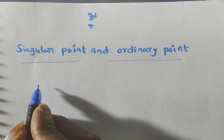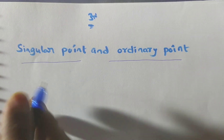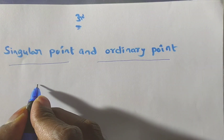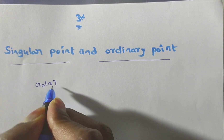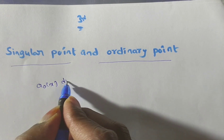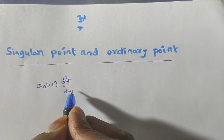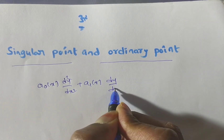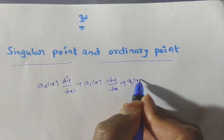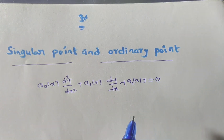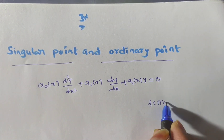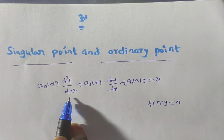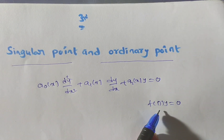Now, what is meant by singular point or ordinary point? We have to consider the second order differential equation of the form: a₀(x) · d²y/dx² + a₁(x) · dy/dx + a₂(x) · y = 0. This is an ordinary differential equation of order 2, like f(D)·y = 0.